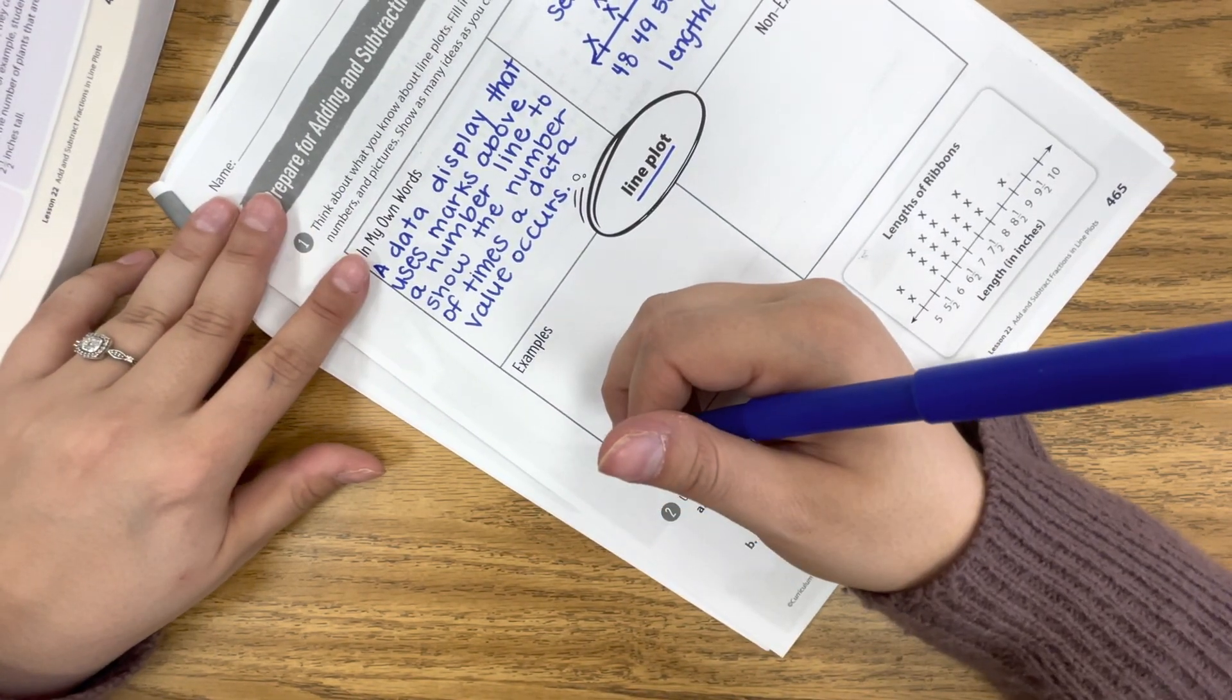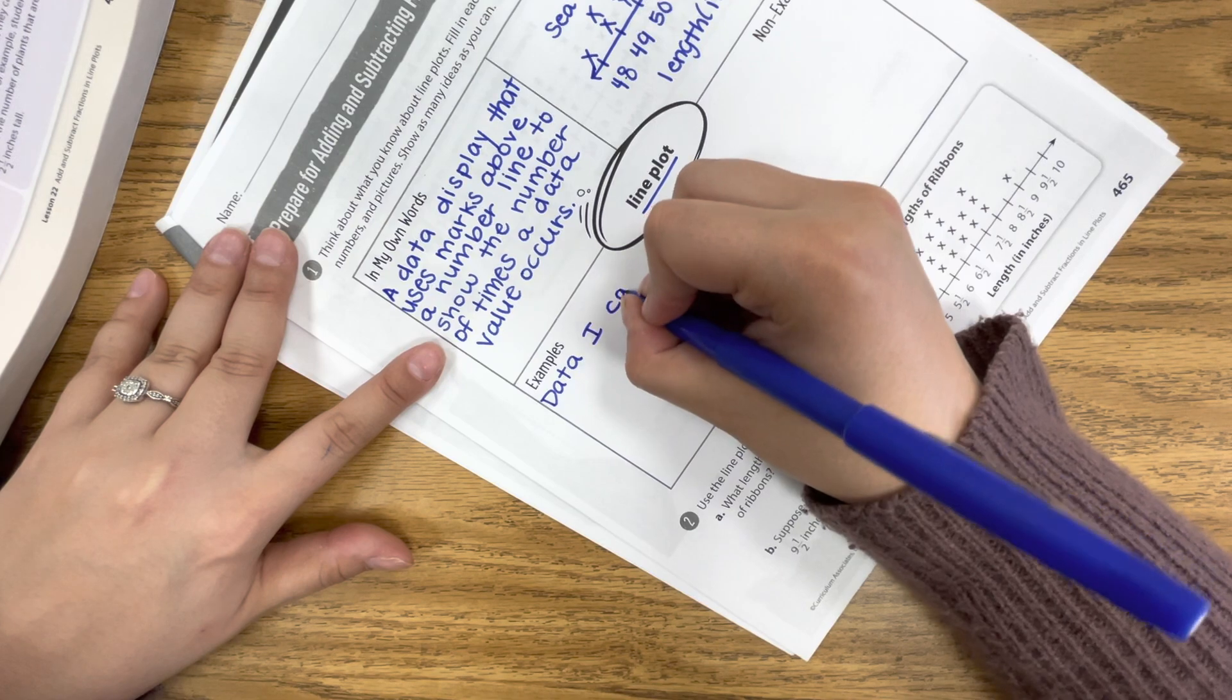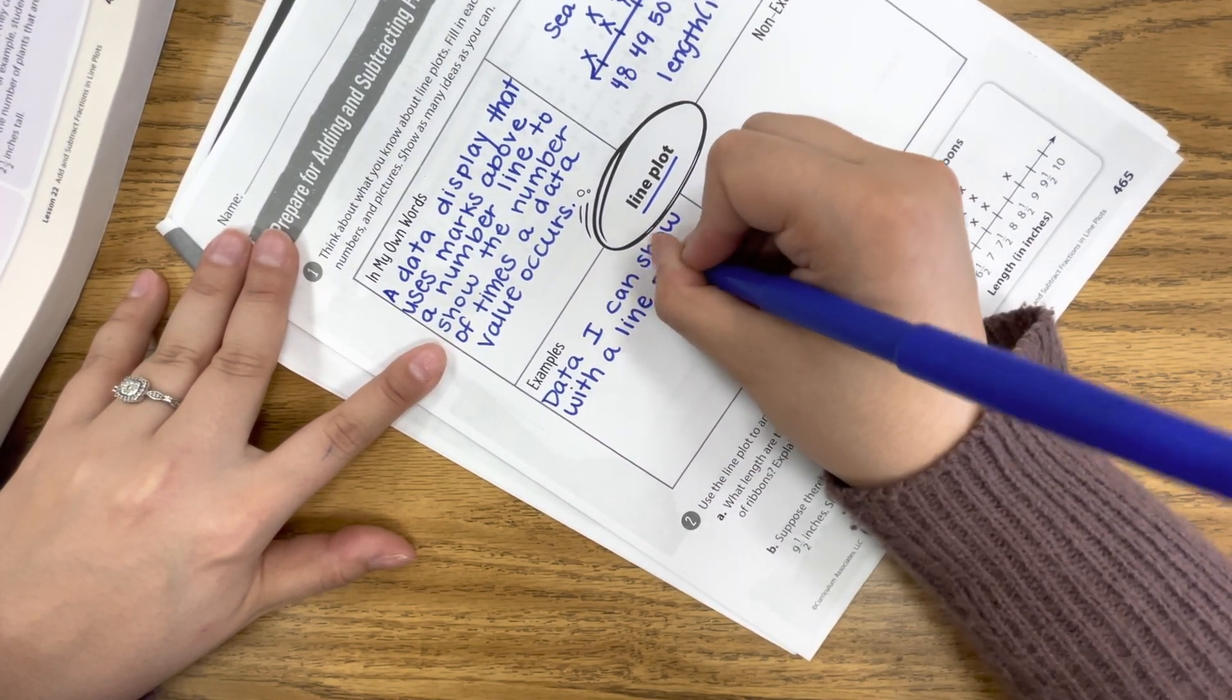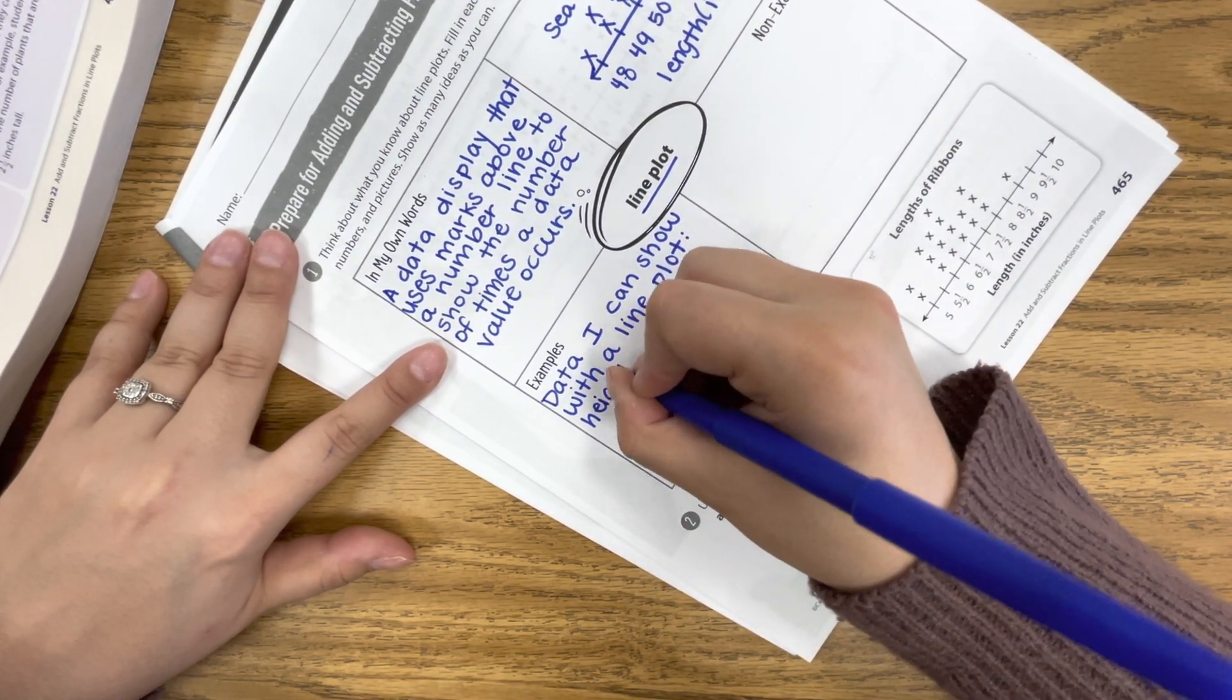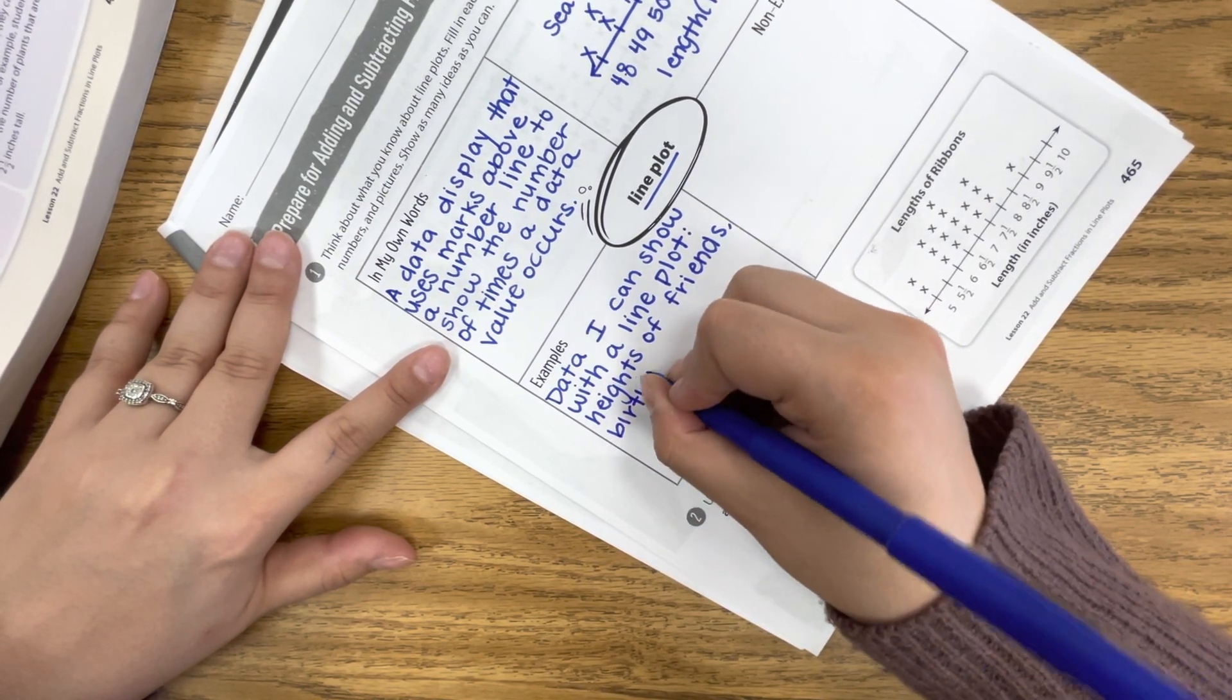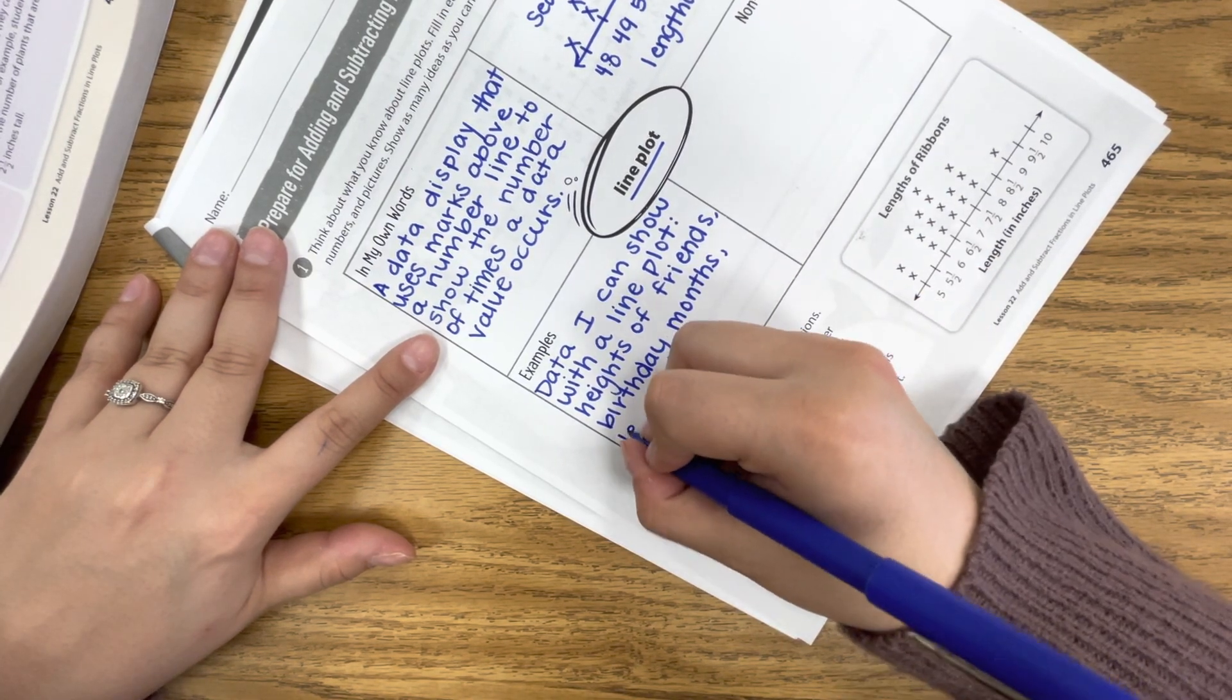So examples that we can show. So data I can show with a line plot. Heights of my friends. We could also show birthday months. So who was born in what month. And then we could also show lengths of pencils or lengths of anything, right?